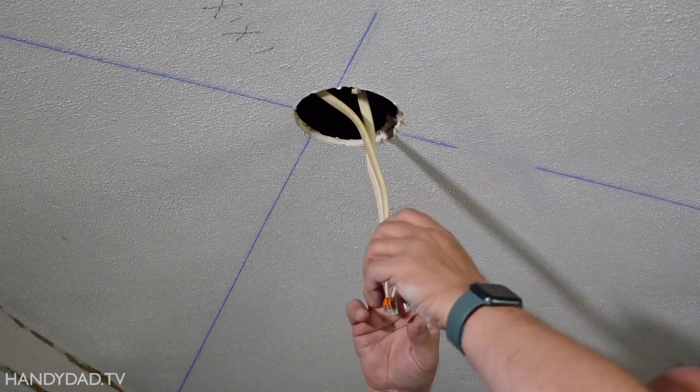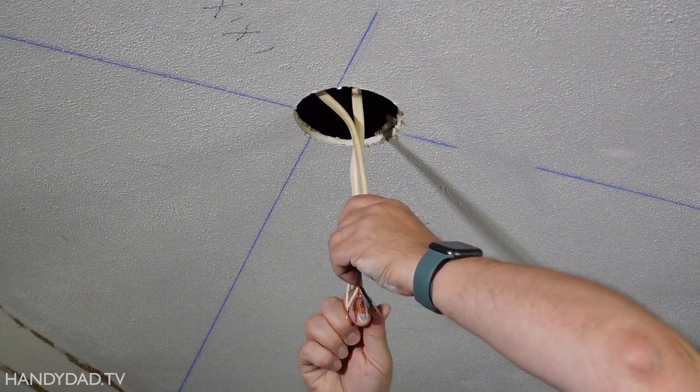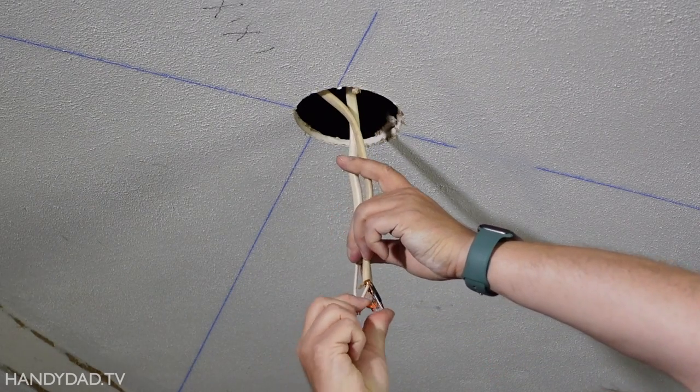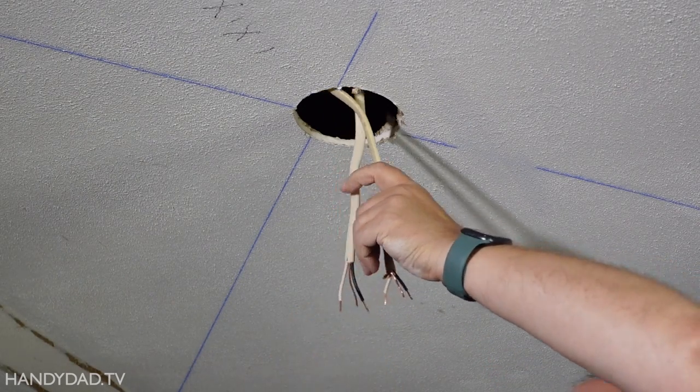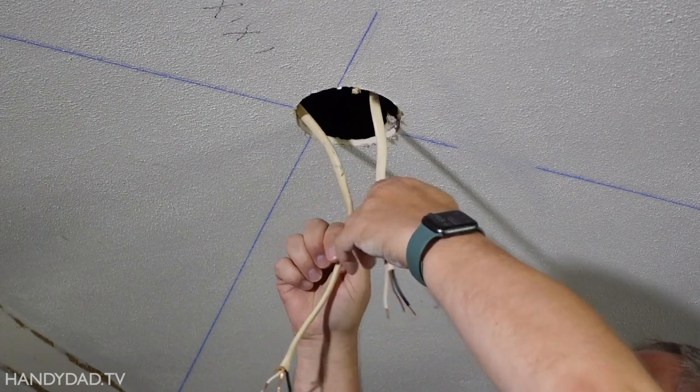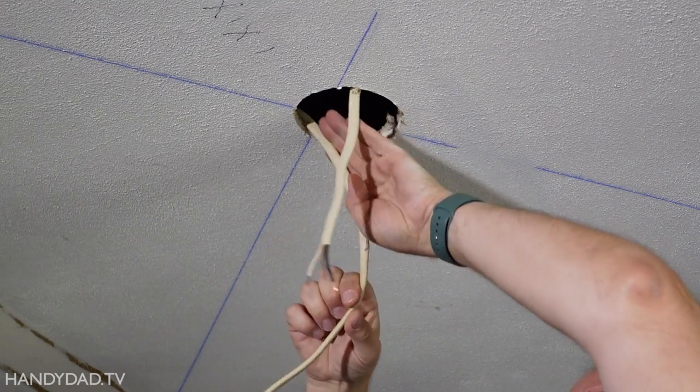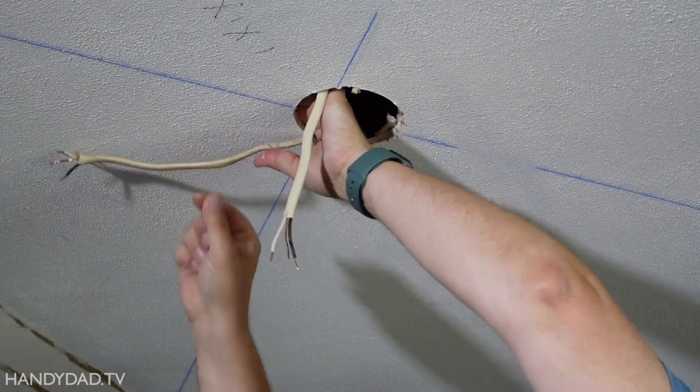With the power off, I can take these temporary WAGO lever nuts off. They're much easier to work with than wire nuts. And these are going to go in the box, but at least this way I can get the wire out of the way while I'm working.